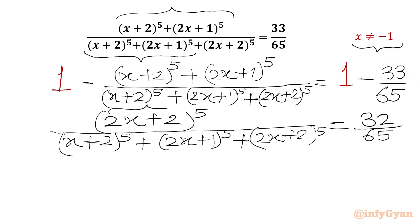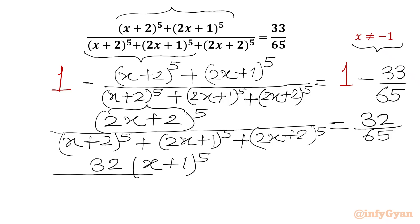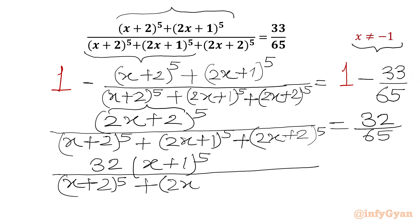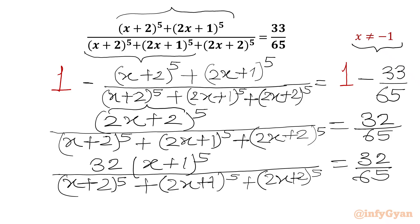Now I can take 2 common from the bracket (2x+2)^5, giving 2^5 = 32 as a multiplier, with (x+1)^5 remaining inside. So we have 32·(x+1)^5 in the numerator over (x+2)^5 + (2x+1)^5 in the denominator, equal to 32 over 65. Now we divide both sides by 32, cancelling it out, leaving 1 on the RHS.